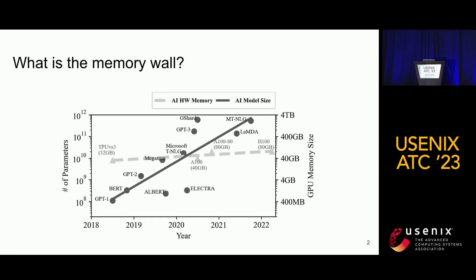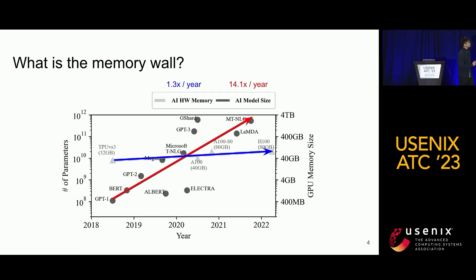To start the talk, let's talk about the Memory Wall. The figure here shows the model size of recent natural language processing models like GPT. As you can see, the model size is increasing 14.1 times per year. However, the available memory resource on GPU is only growing 1.3 times per year. And this gap is what we call the Memory Wall, and it can have a huge impact on data-intensive applications.